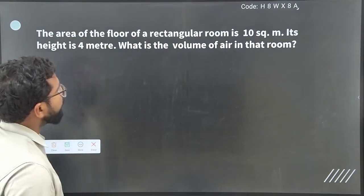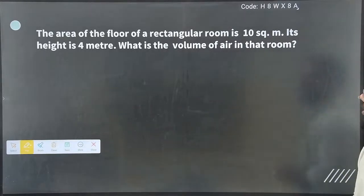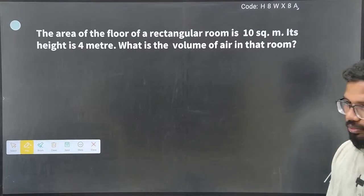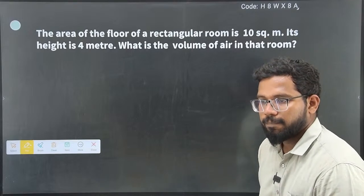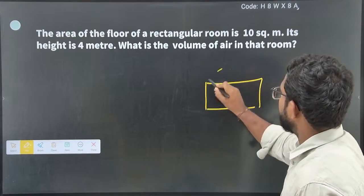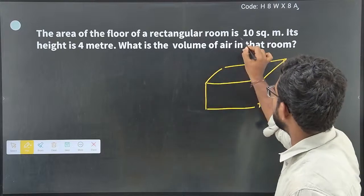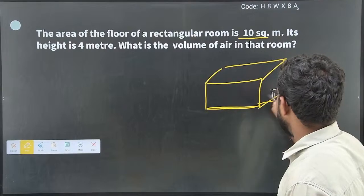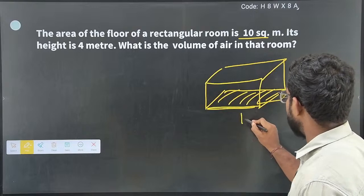Next question: the area of the floor of a rectangular room is given as 10 square meters, and its height is four meters. What is the volume of the air in that room? Very simple and easy. It is definitely a cuboid because of the height and the floor area. The entire floor area is 10 square meters.